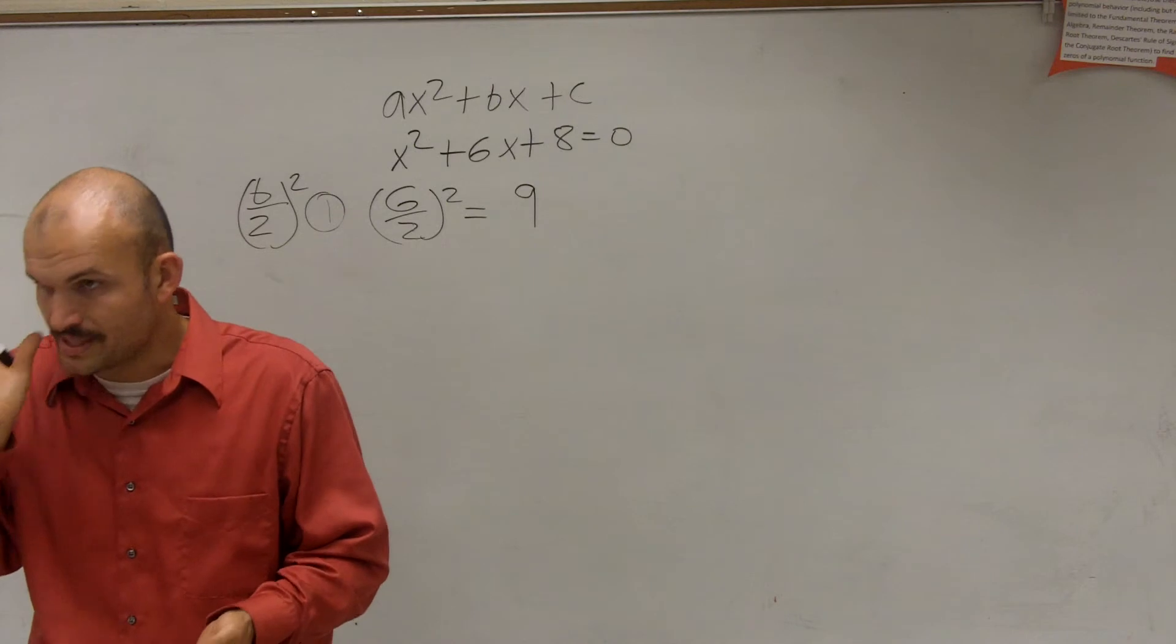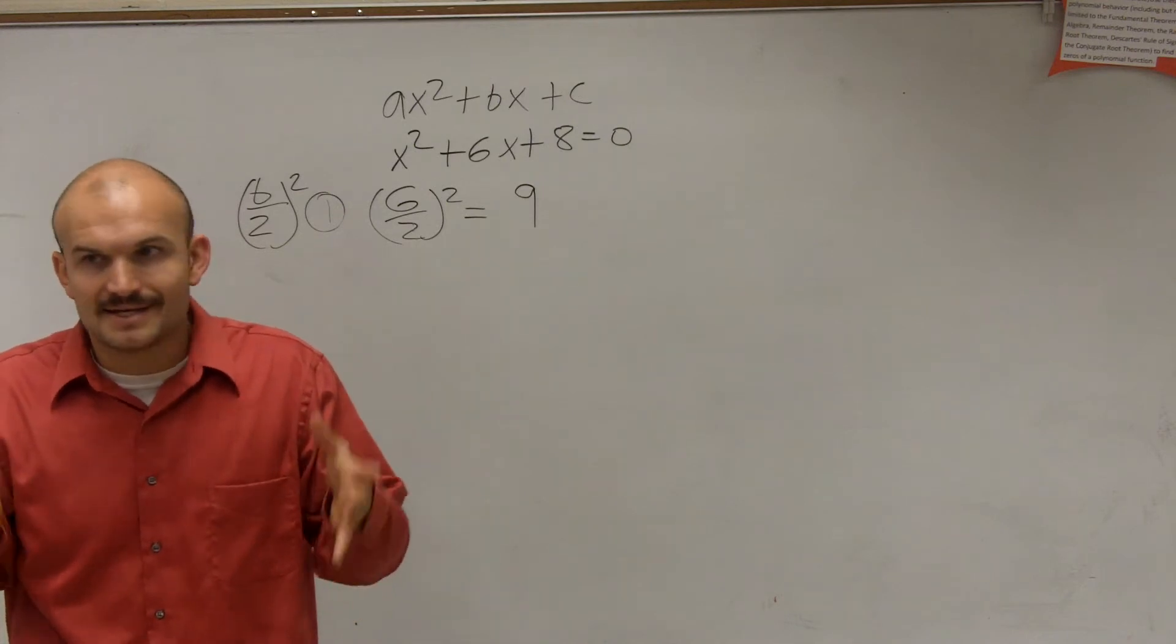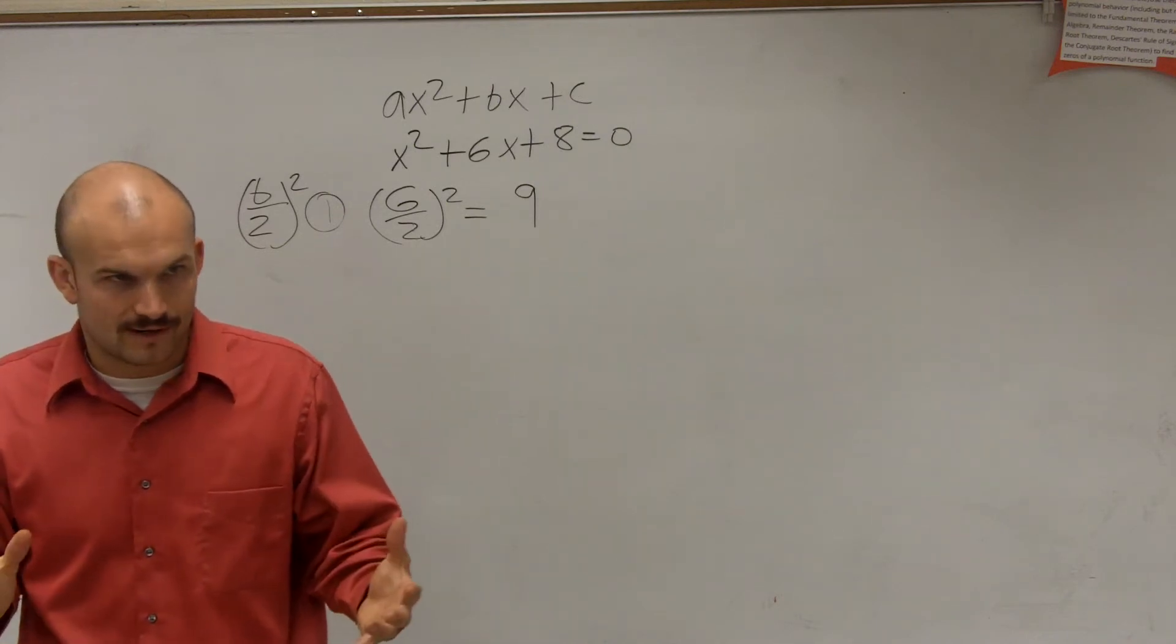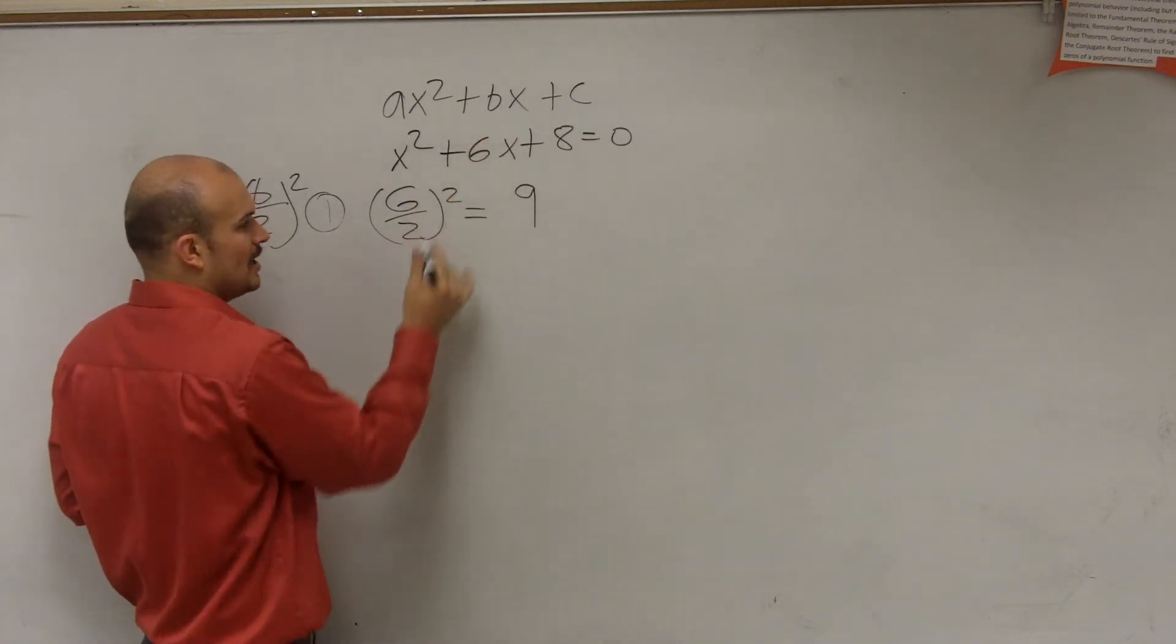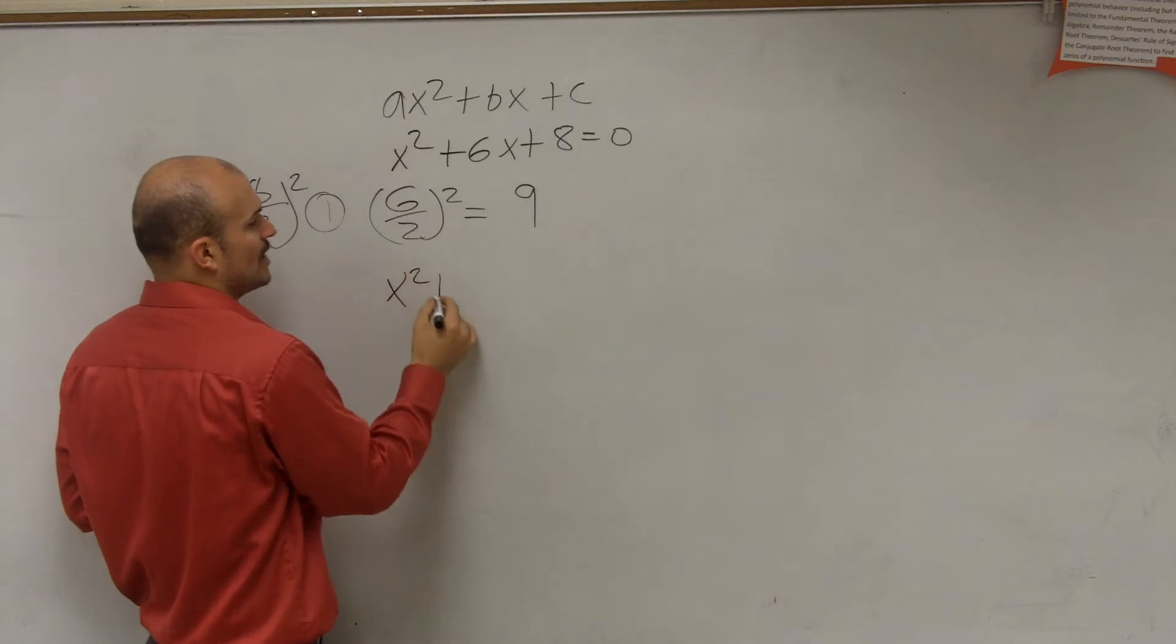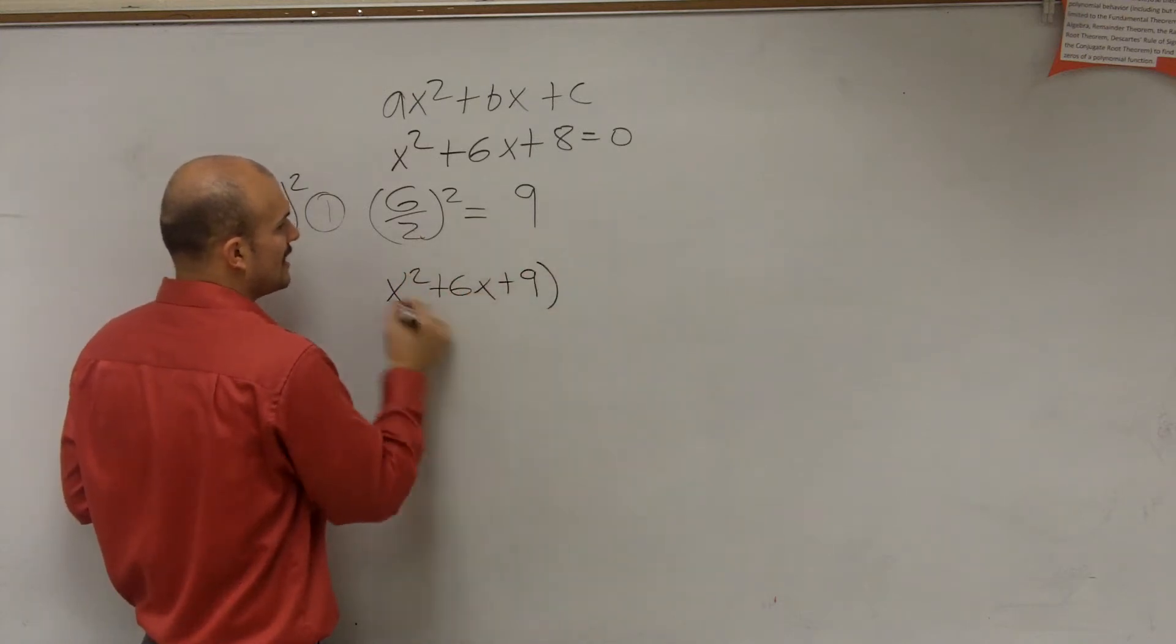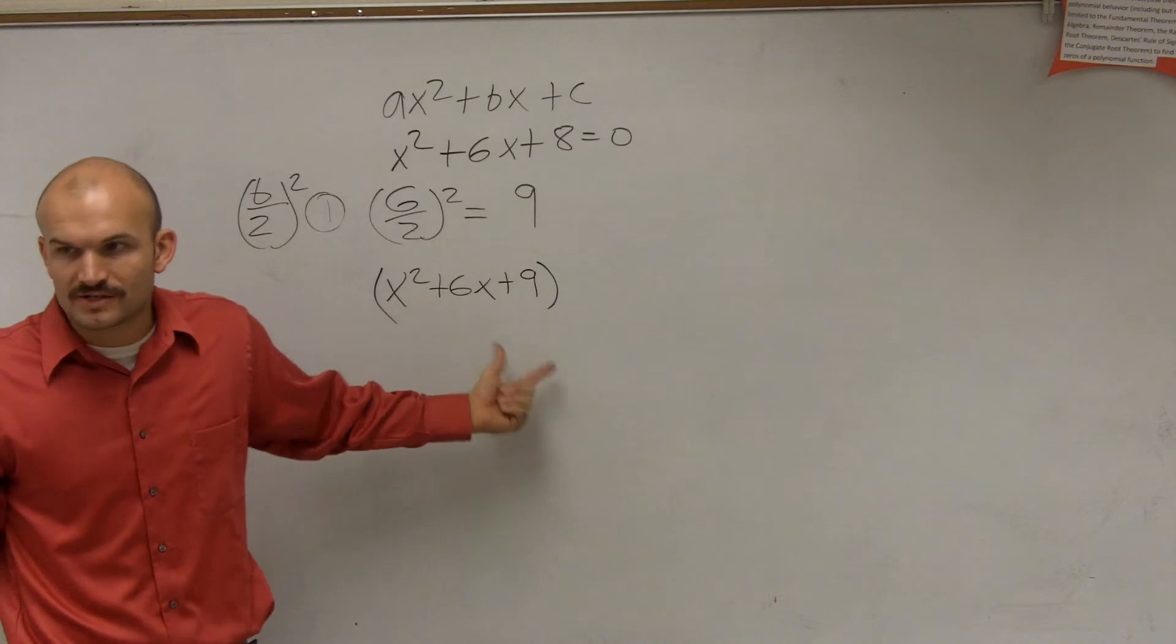Now, here's where it gets a little confusing. Remember, 9 is the value that creates a perfect square. So therefore, I'm going to add it to my other two values. So I'm going to say x squared plus 6x plus 9. That is my perfect square.